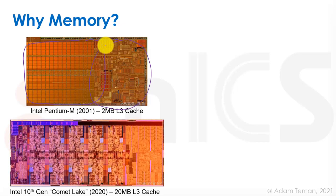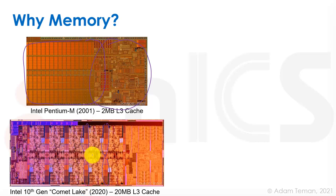Going to newer chips, take for example the 10th generation Comet Lake that came out in 2020. There we already have 20 megabytes of L3 cache versus the 2 megabytes on the Pentium M. Extra chip area is used for cramming more and more memory into the chip. The memories here are now interleaved in between the multi-core chip but they're also all over the place on such a chip.